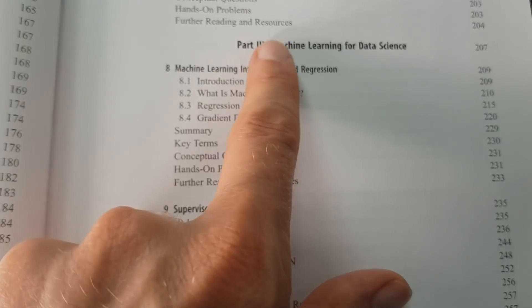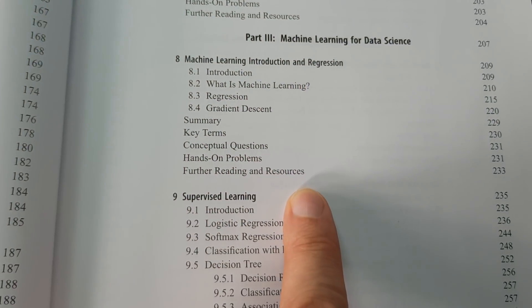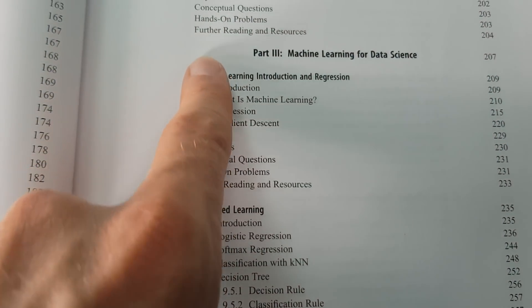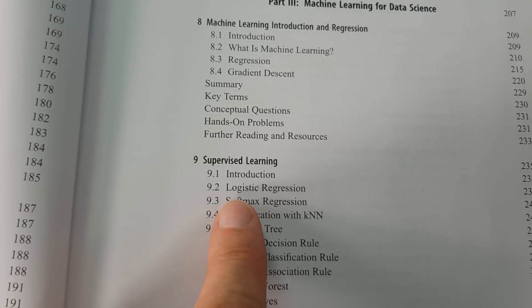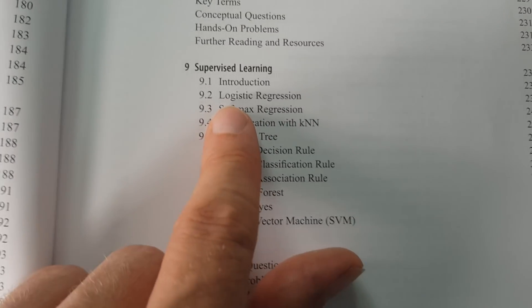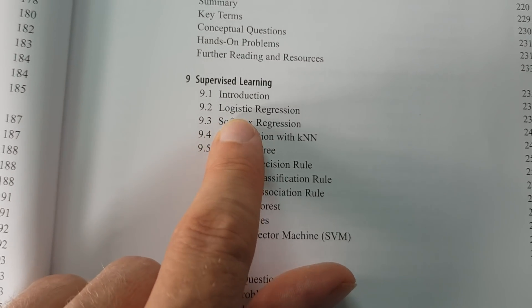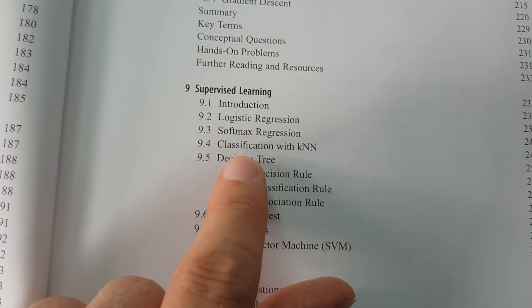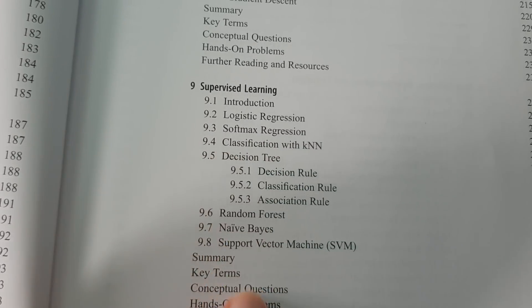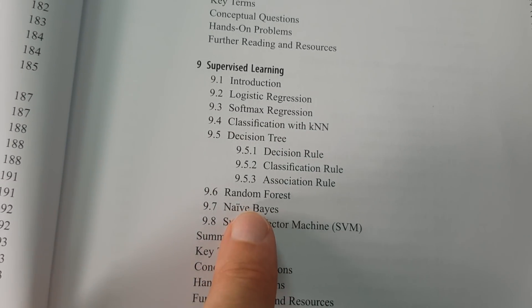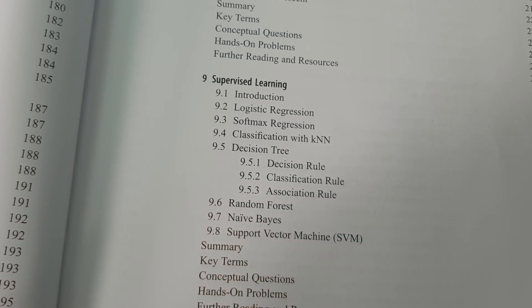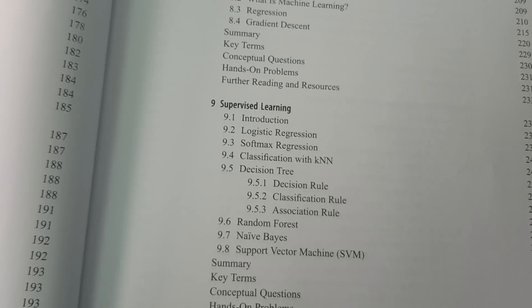It covers Unix, Python, R, and MySQL — it's really comprehensive. There's a little bit of theory on machine learning for data science, and then we look at specific supervised learning techniques: logistic regression, softmax regression, decision trees, random forest, naive Bayes, and support vector machines. So it's really quite a thorough introduction.